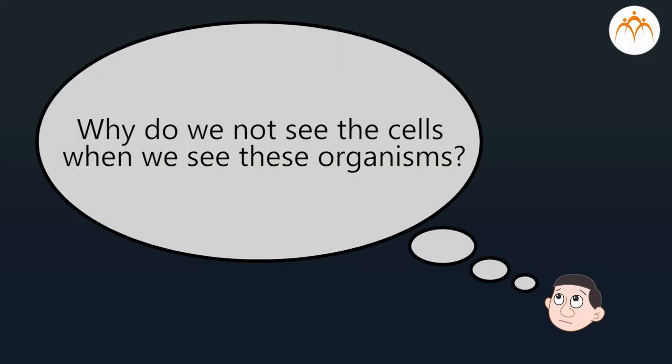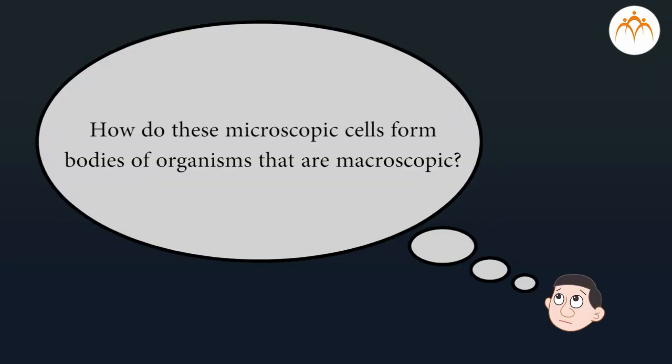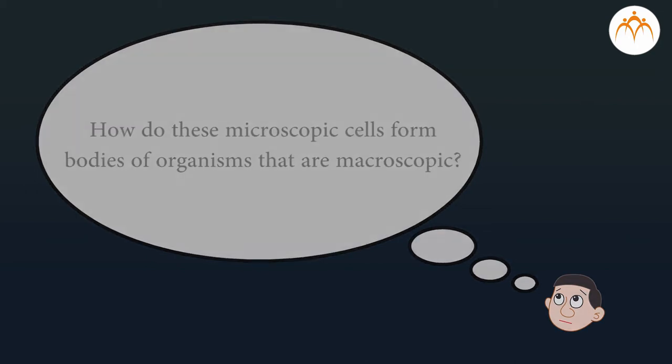The question is, then why do we not see the cells when we see these organisms? This is because the cells are very tiny or more appropriately microscopic. It means that most cells are so small in size that they are not visible to the naked eye and can be viewed only using a microscope. So, the next question is, how do these microscopic cells form bodies of organisms that are macroscopic and so easily visible to the naked eye?